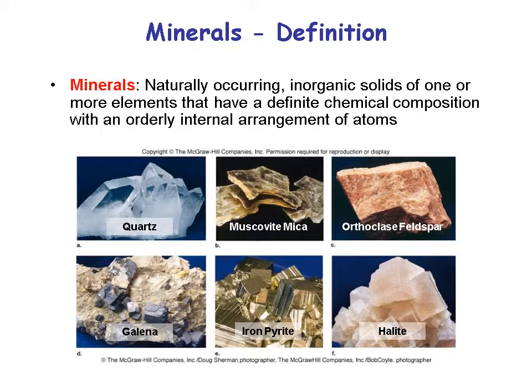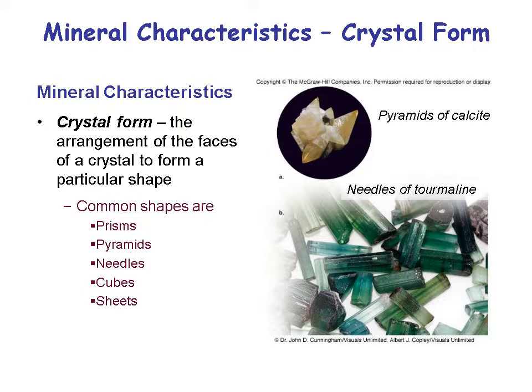Galena is a lead-zinc ore in a cubic shape — there were many galena mines active in northeast Oklahoma and southeast Kansas. Iron pyrite is an iron sulfide — iron and sulfur in a cubic shape. Some people call iron pyrite fool's gold because it looks gold in color but is just iron and sulfur. Halite is sodium chloride, also cubic — the three minerals galena, pyrite, and halite are all roughly cubic in shape.